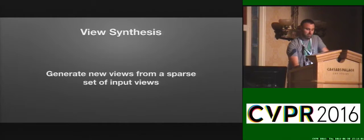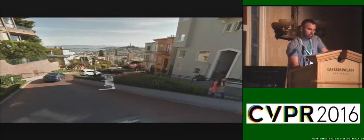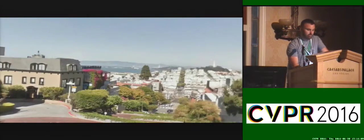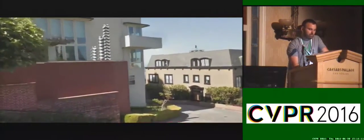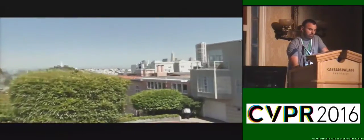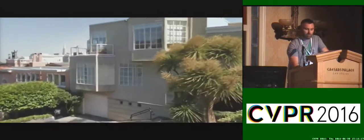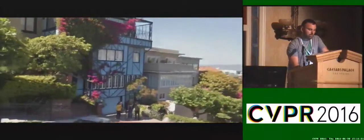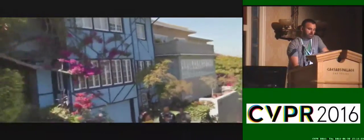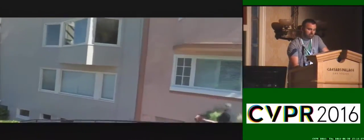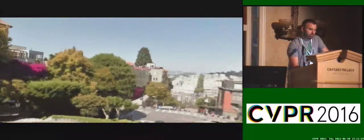In this work, we addressed the problem of view synthesis. Given a set of sparse input views of a scene like this, how do we synthesize a continuous set of new views, like this? This sequence generated by our method has five times as many frames as the original sequence. View synthesis is an extremely challenging, under-constrained problem. It requires estimating correspondences, warping and blending pixels from multiple images and filling holes. All of these subproblems typically involve handcrafted methods with many carefully chosen parameters.